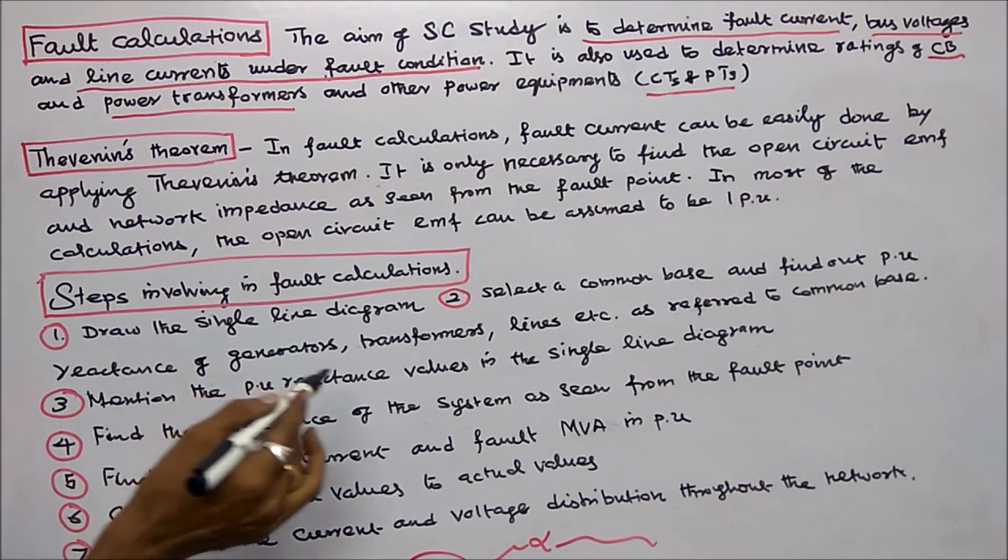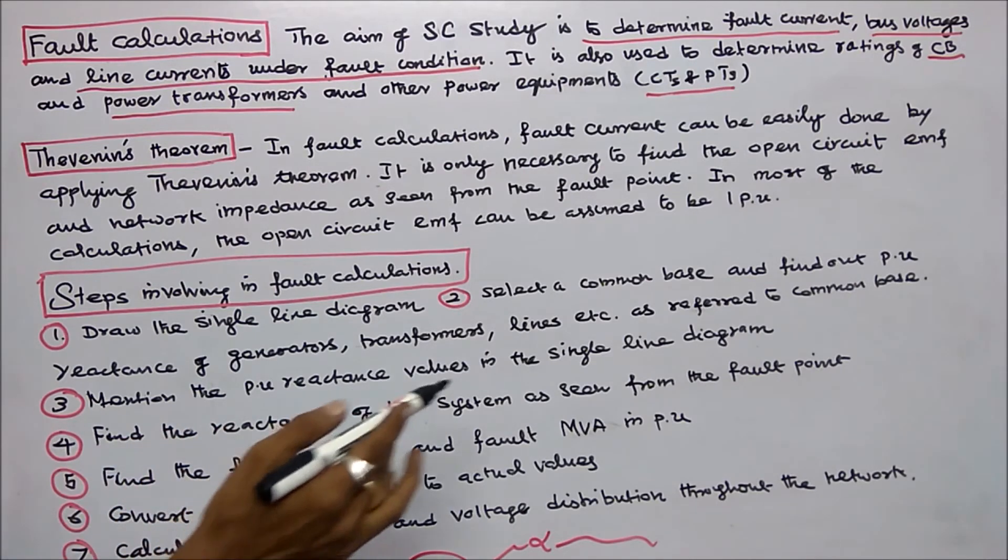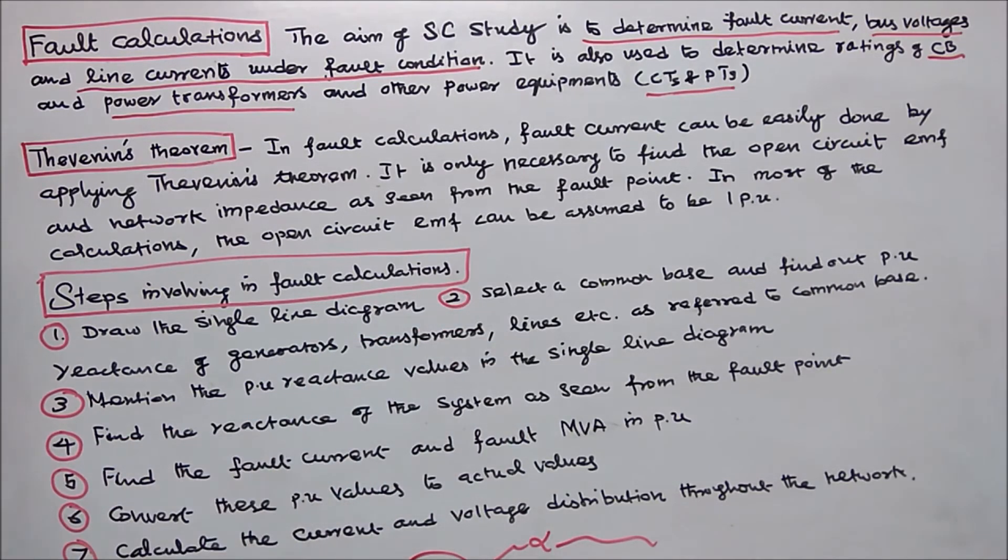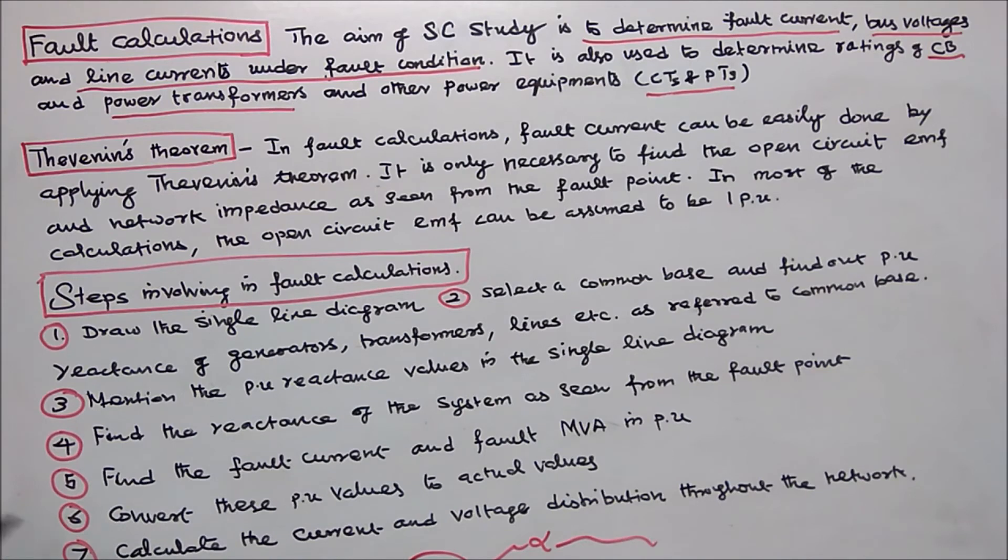Step three, mention the per unit reactance values in the single line diagram. Step four, find the reactance of the system as seen from the fault point. Step five, find the fault current and fault MVA in per unit. Step six, convert these per unit values into actual values. Step seven, calculate the current and voltage distribution throughout the network.